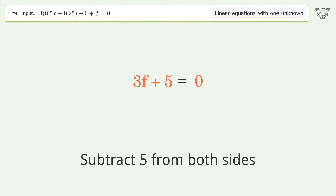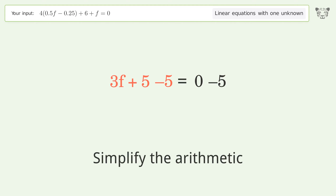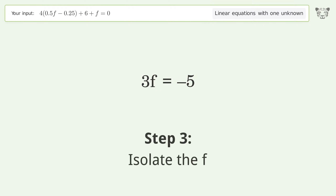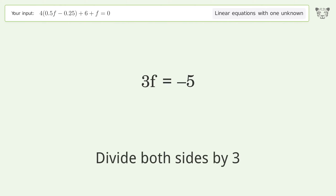Subtract 5 from both sides. Simplify the arithmetic. Isolate f by dividing both sides by 3.